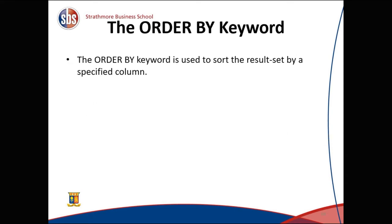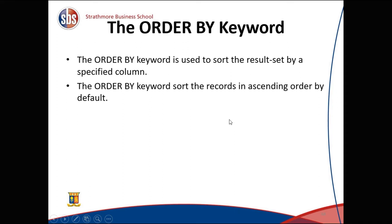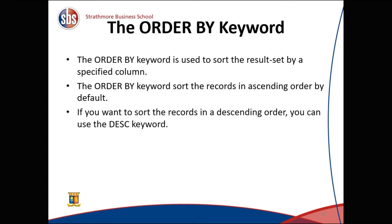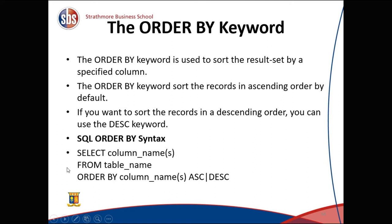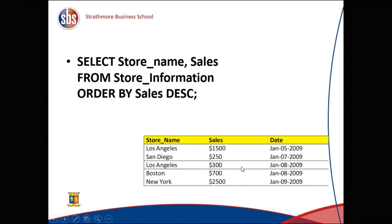The ORDER BY keyword is used to sort the result set by a specified column — alphabetically, chronologically, or in ascending or descending order. ORDER BY sorts records in ascending order by default; to sort descending, include the word DESC. For example, SELECT store_name, sales FROM store_information ORDER BY sales DESC will display New York first, followed by Los Angeles, then Boston, then Los Angeles again, then San Diego.